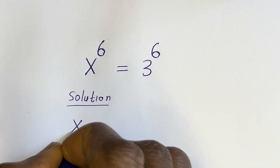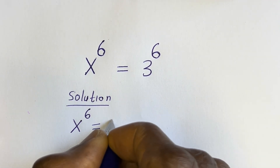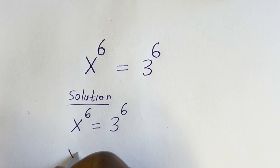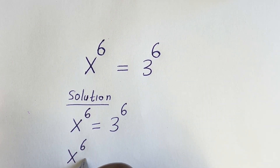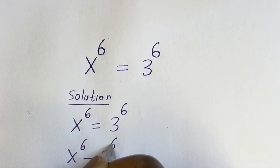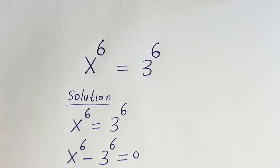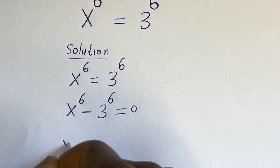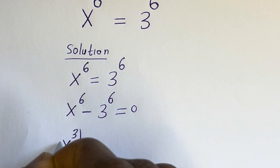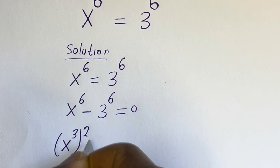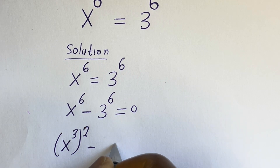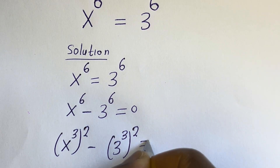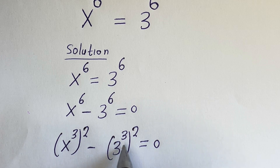Here we have x to the power of 6 is equal to 3 to the power of 6. If we bring the right side over, it becomes x to the power of 6 minus 3 to the power of 6 is equal to 0. So x to the power of 6 can be written as (x to the power of 3) squared, and 3 to the power of 6 can be written as (3 to the power of 3) squared, giving us (x³)² minus (3³)² is equal to 0. This is in the form of a perfect square difference.